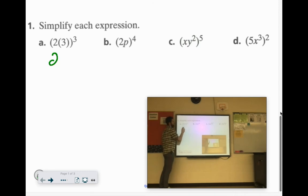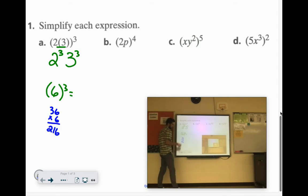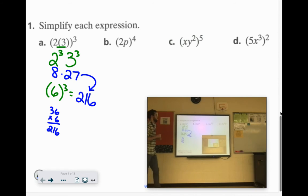So we would have 2 to the 3rd power times 3 to the 3rd power. Or you can multiply these together first, since it's all in parentheses, so it would be 6 to the 3rd power. And whatever that is. Let's see, 36 times 6 would be 216, I believe. So 216 this way. Otherwise, 2 to the 3rd, 2 times 2 times 2 is 8. 3 times 3 is 9, times another 3 is 27. And 8 times 27 would also give you that 216.